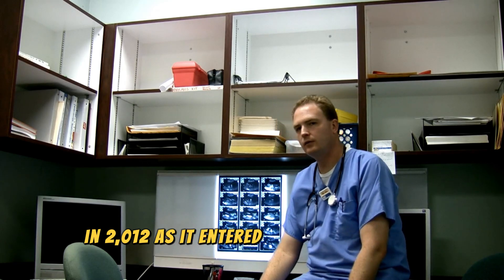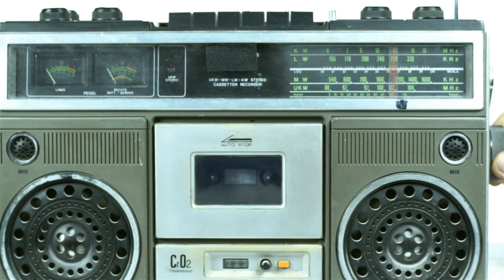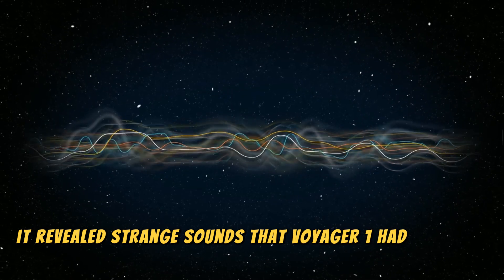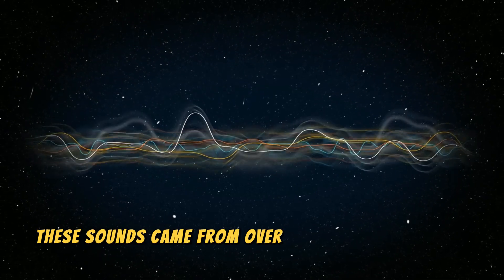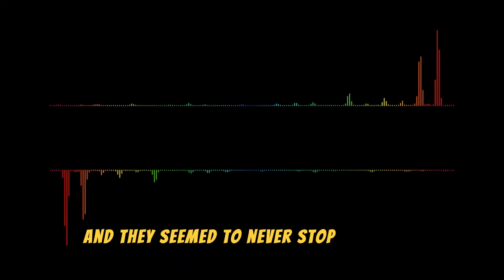In 2012, as it entered interstellar space, NASA scientists received a signal from Voyager 1 that sent chills down their spines. When this signal was decoded, it revealed strange sounds that Voyager 1 had recorded. These sounds came from over 14 billion kilometers away from Earth, and they seemed to never stop or reduce.